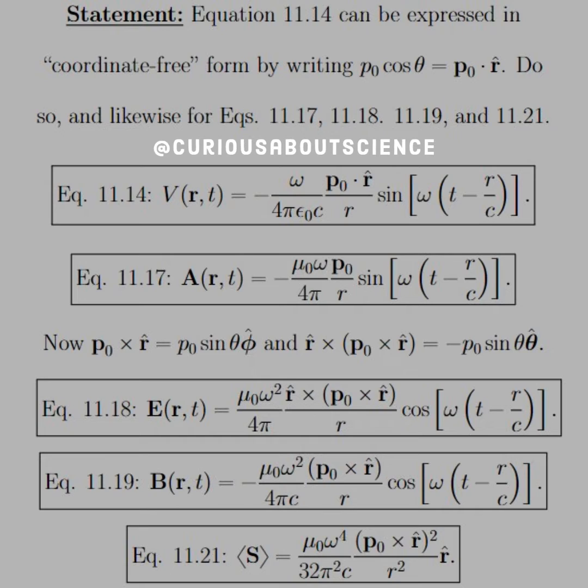The statement: equation 11.14 can be expressed in coordinate-free form by writing P-naught cosine theta as the dot product of two vectors, P-naught and R-hat. Do so, and likewise, for equations 17, 18, 19, and 21.